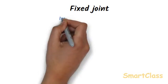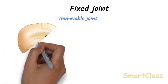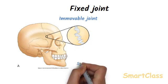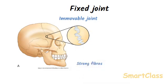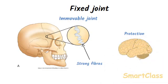In some joints, the bones are held so tightly together that they cannot move at all — such joints are called fixed joints. In fixed joints, the bones are held very firmly together by strong fibers. Fixed joints are immovable joints. Their function is to provide strength and support to the body or to protect delicate organs like the brain. Fixed joints occur in our skull — the plate-type bones of the skull are held together by fixed joints and cannot move at all, making the skull very strong to protect the brain.